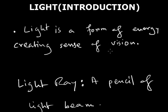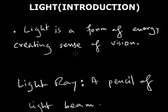How we see is basically due to the light coming out of the objects we are watching. Currently you are watching this video, which means the screen is emitting some light and creating a sense of vision in your mind, and by that you are able to see this video.